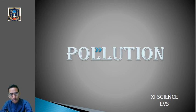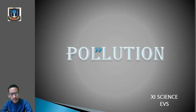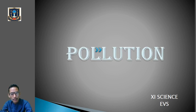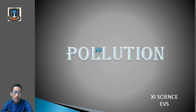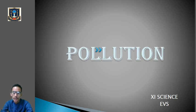Good morning dear students of class 11 science. Welcome to environmental science class. We have finished two chapters in EBS — chapter one on existence and chapter two on ecology. So today we will begin with a new chapter which we have been learning since we were in junior classes — the chapter we are going to do today is pollution.